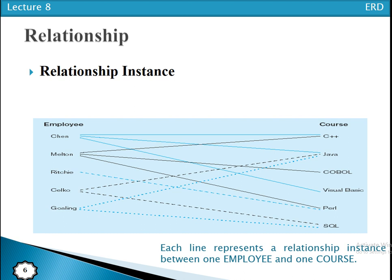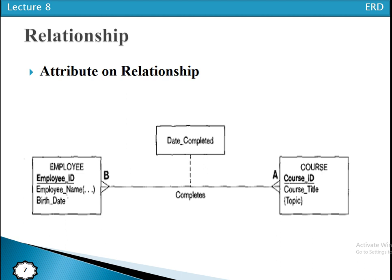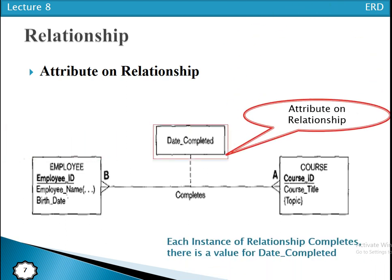It is possible for an attribute to be associated with a relationship. For example, 'completes' is a relationship, and with this relationship one attribute is associated: 'date complete'. For each instance of the relationship 'completes', there is a value for the date complete.